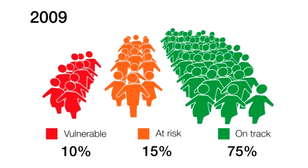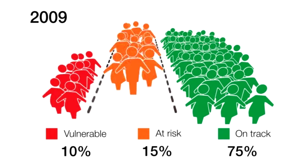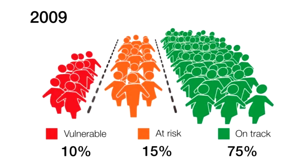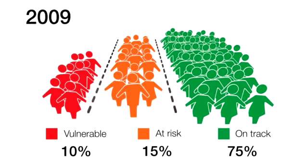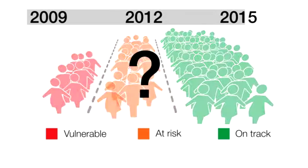The score for the national AEDC cut-offs used to classify children as developmentally vulnerable, at risk, and on track was set in 2009. These cut-offs will be applied to future AEDC data collections, providing a reference point or baseline to track children's developmental outcomes across Australia over time through the program.